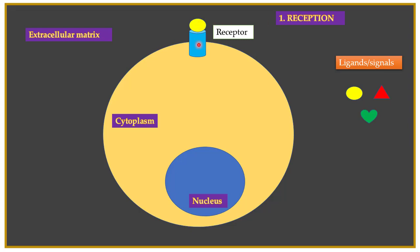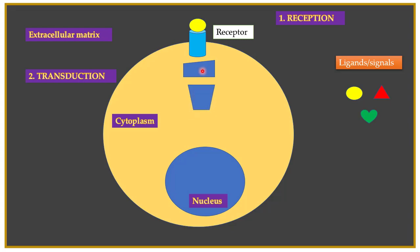In the second step of a signaling pathway, known as the transduction, this occurs in the cytoplasm of the cell. During transduction, different proteins present in the cytoplasm get activated. When the ligand interacts with the receptor, the receptor gets activated and the activated receptor activates a lot of proteins in the cytoplasm. For example, this activated protein activates another protein, which in turn activates more proteins. At the end of the transduction, a specific transcription factor is activated.